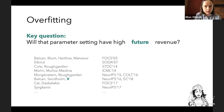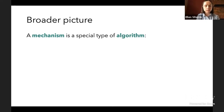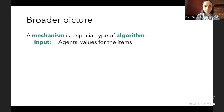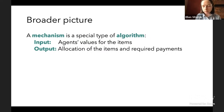I want to connect this to my thesis research, which was more broadly about algorithm design. We can think of a mechanism as a special type of algorithm where the input is a description of agents' values for items for sale, and the output is an allocation of those items and the payments required of agents. Really, a mechanism is just a special type of algorithm with these incentive issues that you have to take care of.